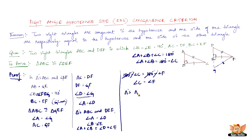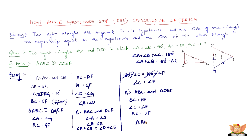So in triangles ABC and DEF, we have BC equal to EF, which is given; angle C equal to angle F, which we just proved; and AC equal to DF, which we proved earlier. Therefore by the Side-Angle-Side criterion, triangle ABC is congruent to triangle DEF. Hence we have proved that the Right Angle Hypotenuse Side congruence criterion is valid.